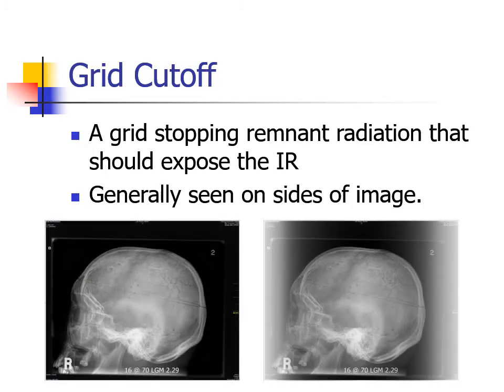The one on the right is suffering from grid cutoff. Notice the white borders in the front and behind the skull caused by the grid stopping information-carrying radiation from reaching the image receptor.